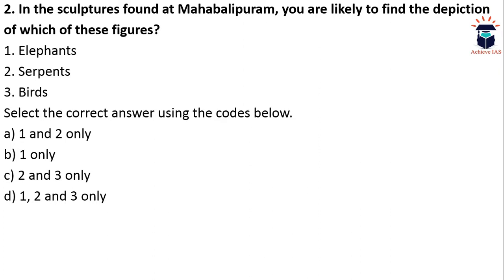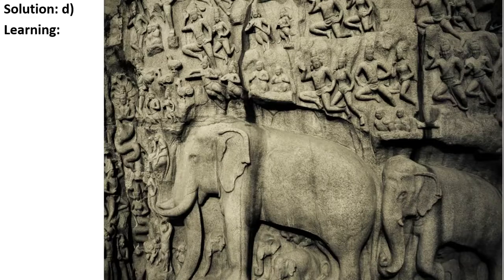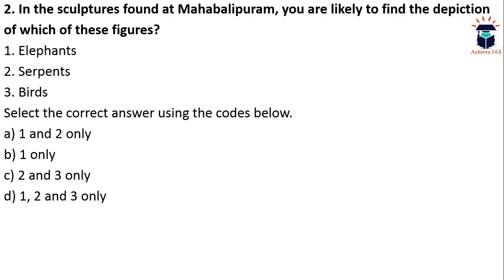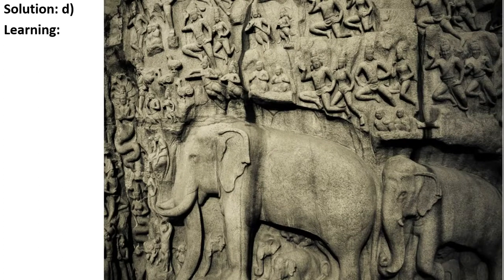The next question: in the sculptures found at Mahabalipuram, you are likely to find the depiction of which figures — elephant, serpent, or bird? The correct answer is D — all of these sculptures have been engraved at the monuments found at Mahabalipuram. A photograph has been included for clarification, where you can see the elephant and also check the serpents.